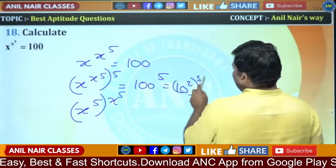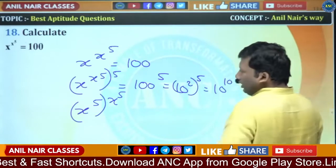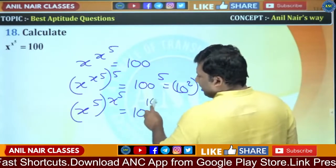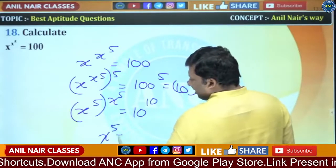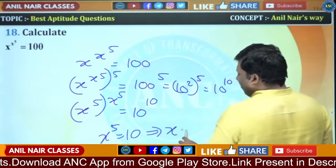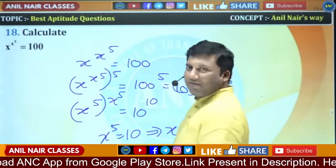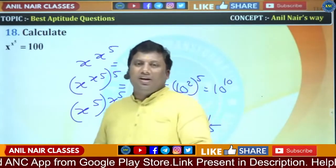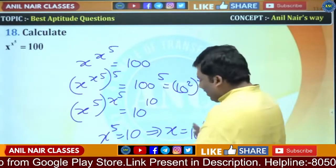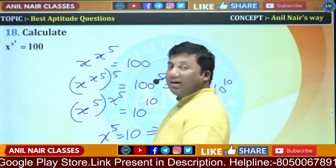We simplify 100^5 as (10^2)^5 = 10^10. So x^5 = 10^10, meaning x^5 = 10, and therefore x = 10^(1/5). The value of x is 10^(1/5). I hope the idea is clear.